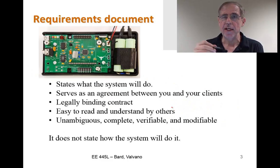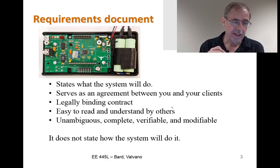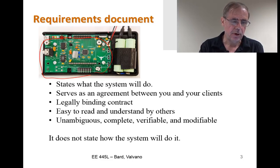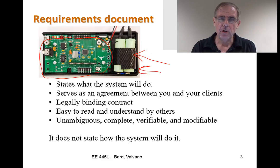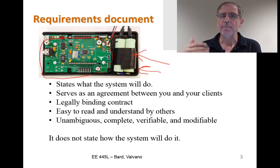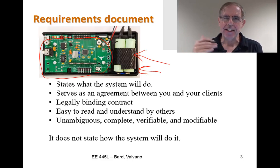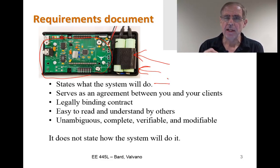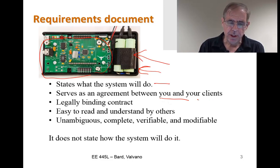If we were to take our lab and go all the way to the solution, it would end up as a printed circuit board, and that printed circuit board would go in a box, and it would have battery power. So in Lab 6, our requirements document is exactly the same as it was for Lab 3 or 5, and that is to tell exactly what the system does. It's an agreement between you and your customers — in this case the teaching assistant. It can actually be a legal binding contract.